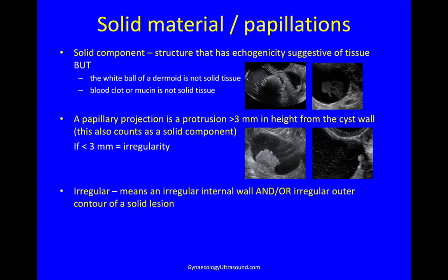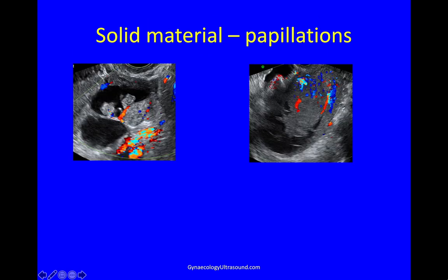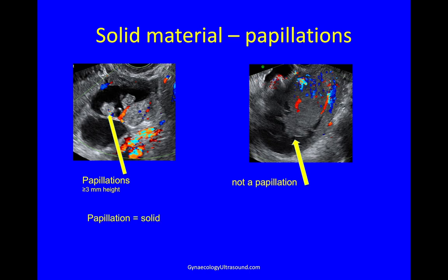Irregular also means an irregular internal wall and/or an irregular outer contour of a solid lesion. So solid material and papillations: a papillation is more than three millimetres in height, juts into the cyst wall, and has fluid on three sides. Solid material that does not indent the cyst wall is solid but not a papillation. All papillations are solid, but not all solid material is a papillation.